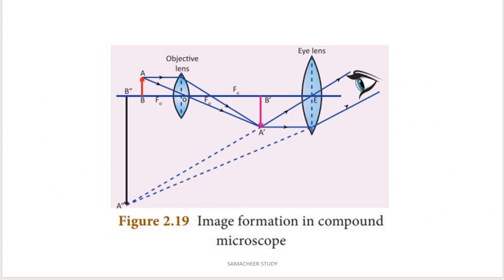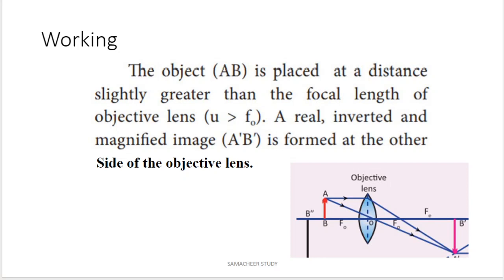So, this is the working. Now students, there are two parts. First, one convex lens — the objective lens. Second, another convex lens — the eye lens. So, this is the object. A, B is the object. That is why you can magnify it. A, B is the object placed at a distance slightly greater than the focal length of the objective lens.